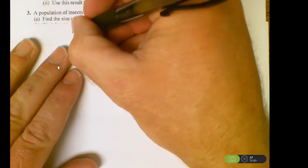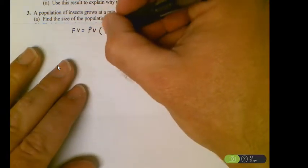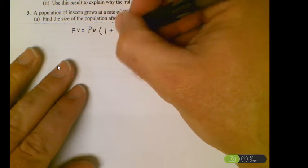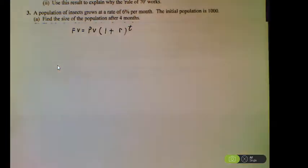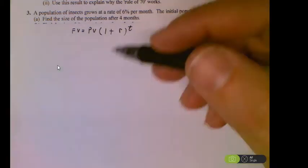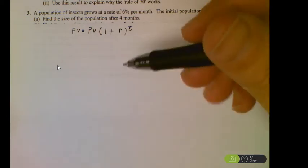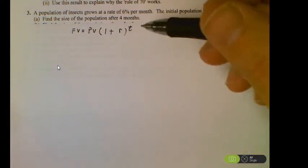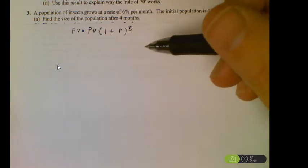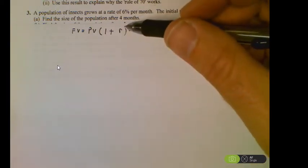So we get this formula that we often work with. We've got a future value and a present value. Anytime we are growing, we would use 1 plus the rate with an exponent of time. Remember, for rates of growth, we do 1 plus the rate. If we are decreasing, it would be 1 minus the rate.